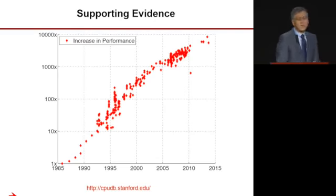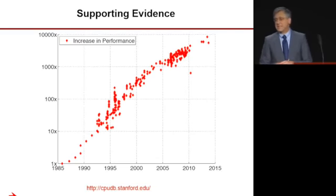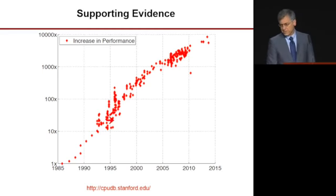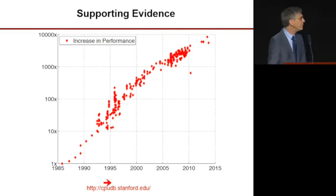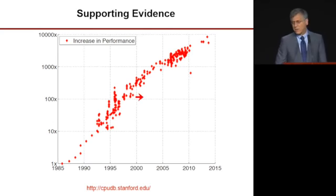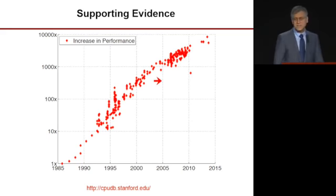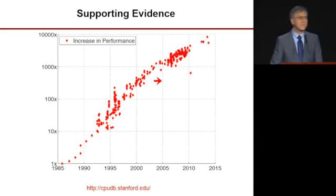A lot of evidence supports this great improvement in performance. A number of people put together a database of microprocessors at cpudb.stanford.edu. We've plotted the performance of CMOS microprocessors over time and you can see over the past 30 years they've increased in performance by about four orders of magnitude.